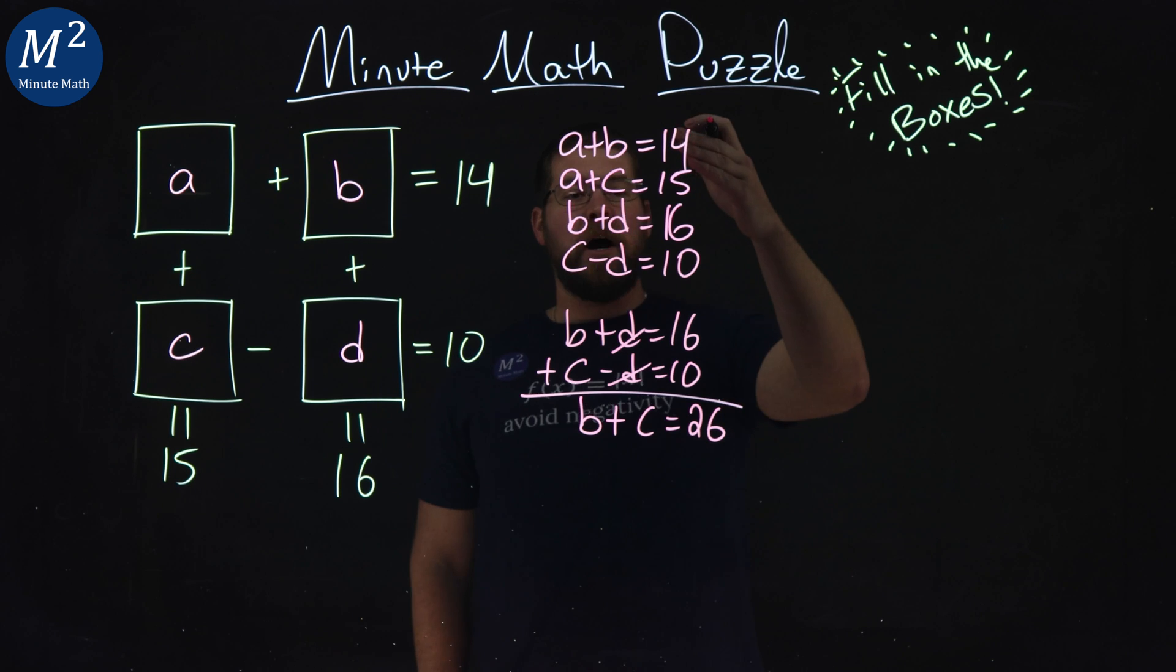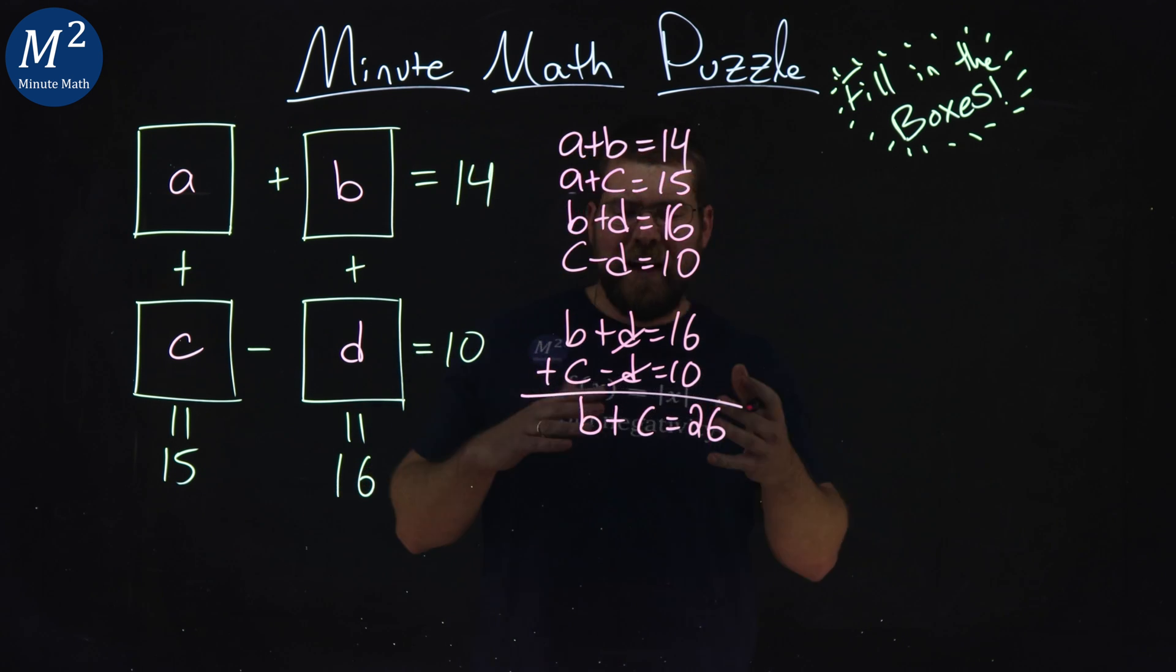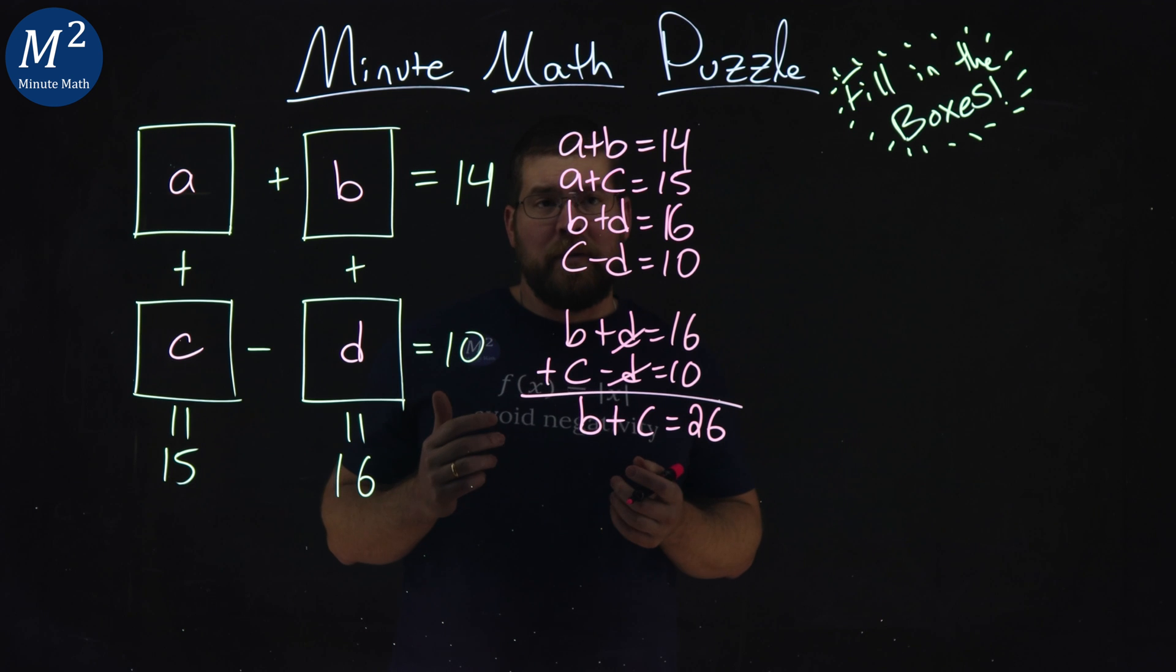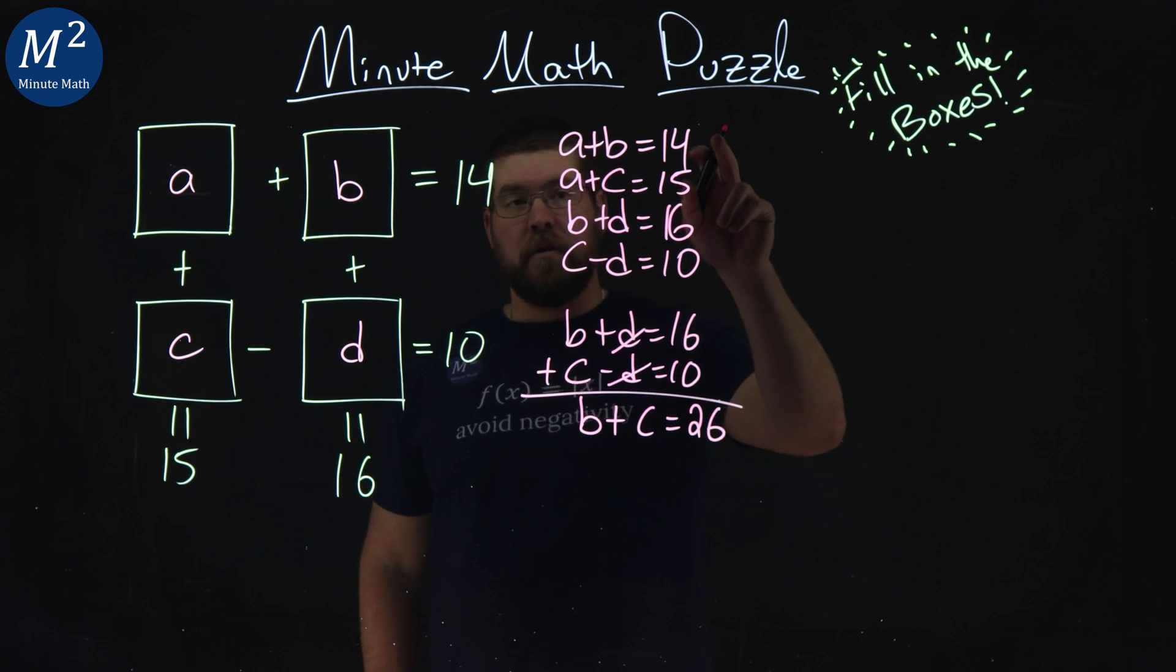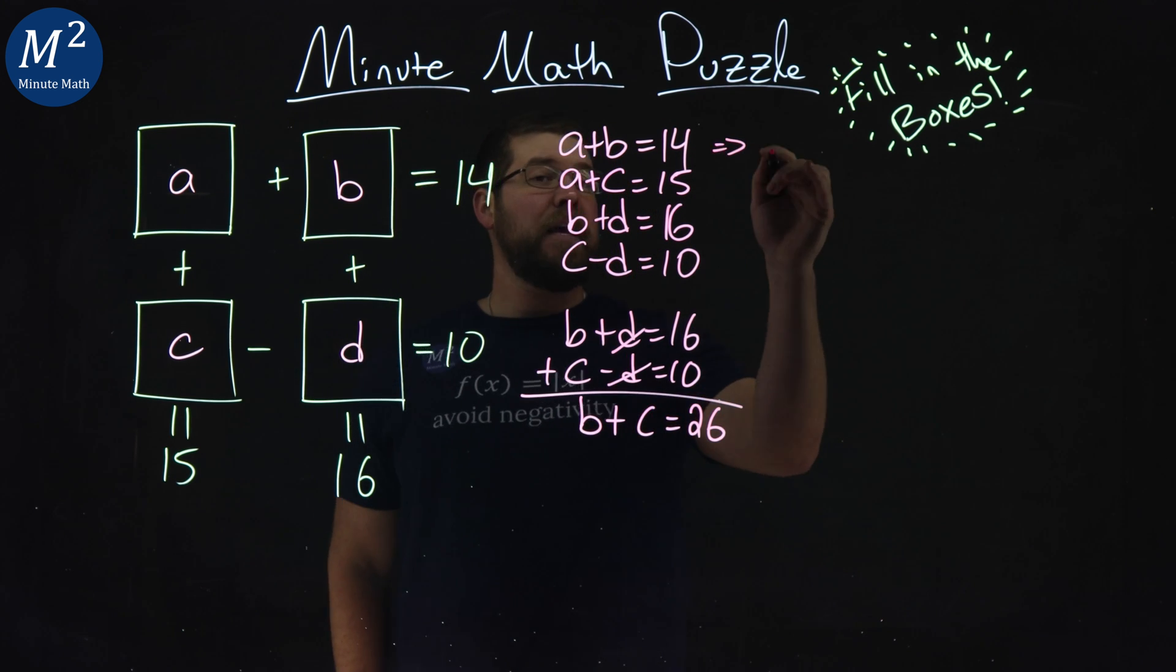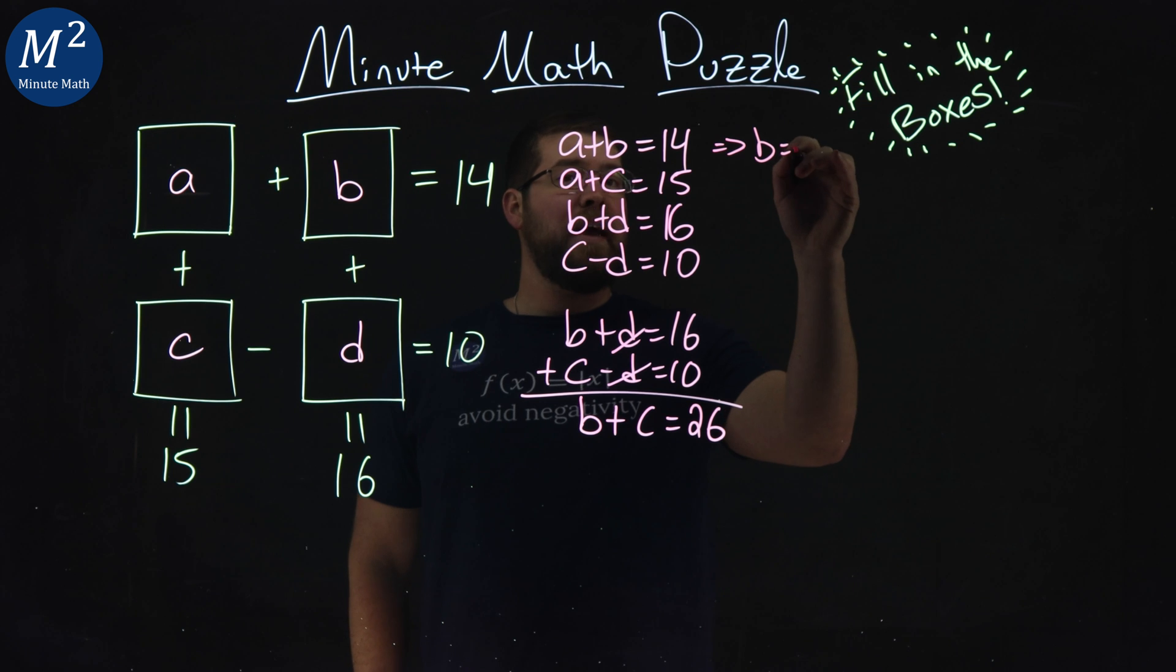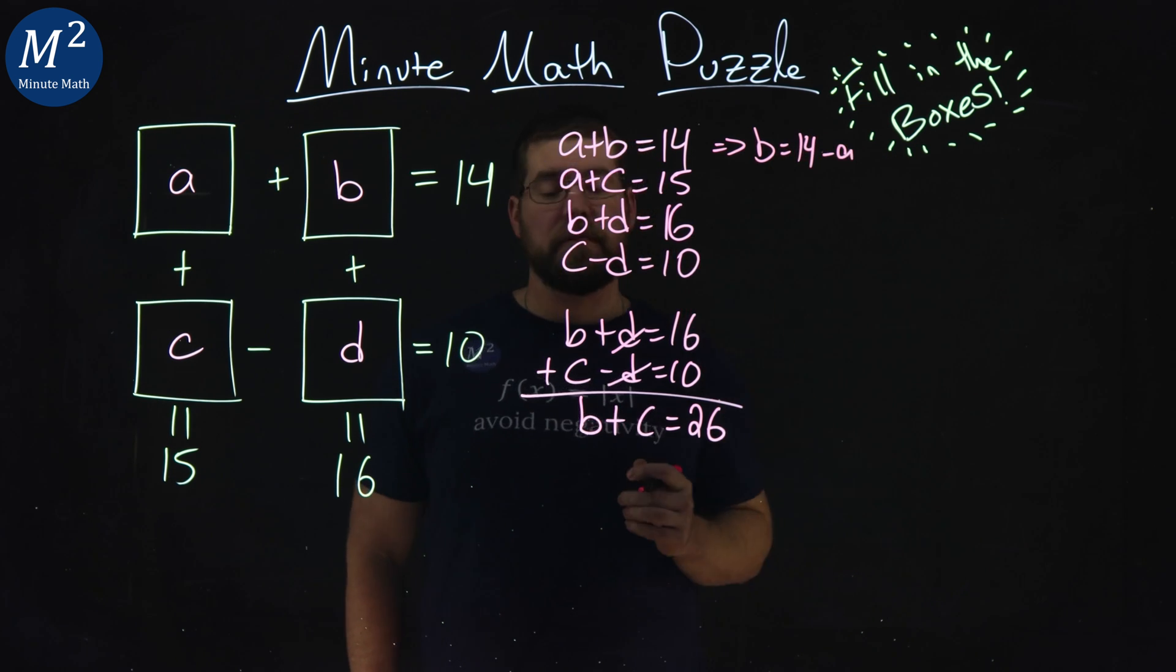Now from here, I want to look through my other equations and see what can I do with that B plus C equals 26, and maybe cancel something out. Well, if I rearrange my first equation, A plus B equals 14, I can make that say that B equals 14 minus A, right? Subtract A to both sides.